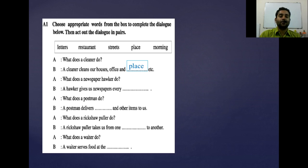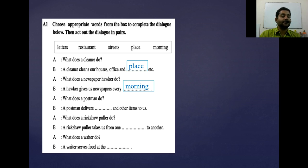A asks another question: 'What does a newspaper hawker do?' B gives the answer: 'A hawker gives us newspapers every morning.' Then A asks: 'What does a postman do?' B answers: 'A postman delivers letters and other items to us.'